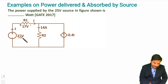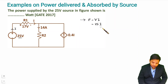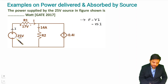If you want to calculate the power supplied by this 25 voltage source, then simply P equals V into I, where V is 25. We need to calculate the value of I, so our question is to find I so that we can identify how much power is supplied by the 25 voltage source.